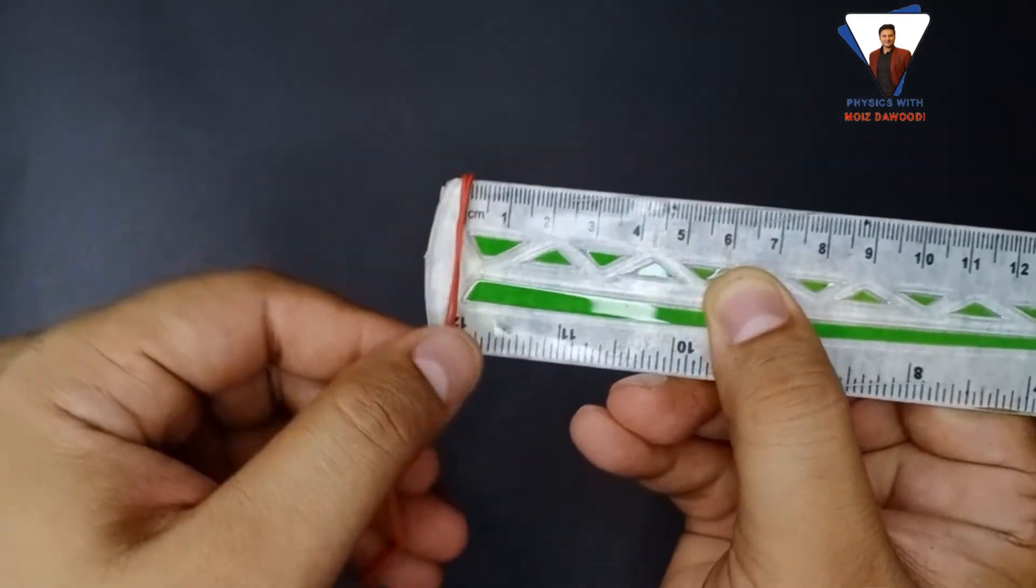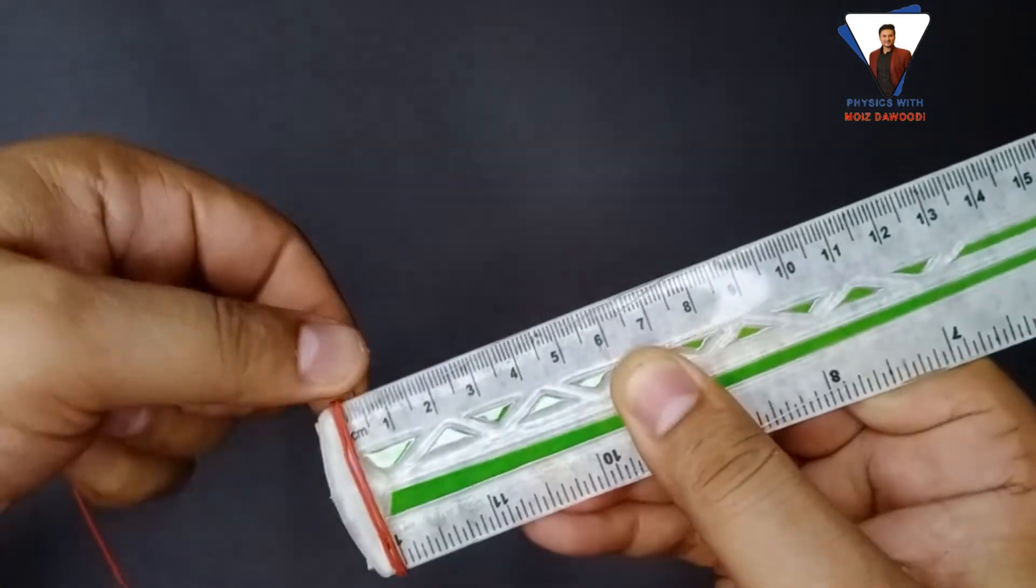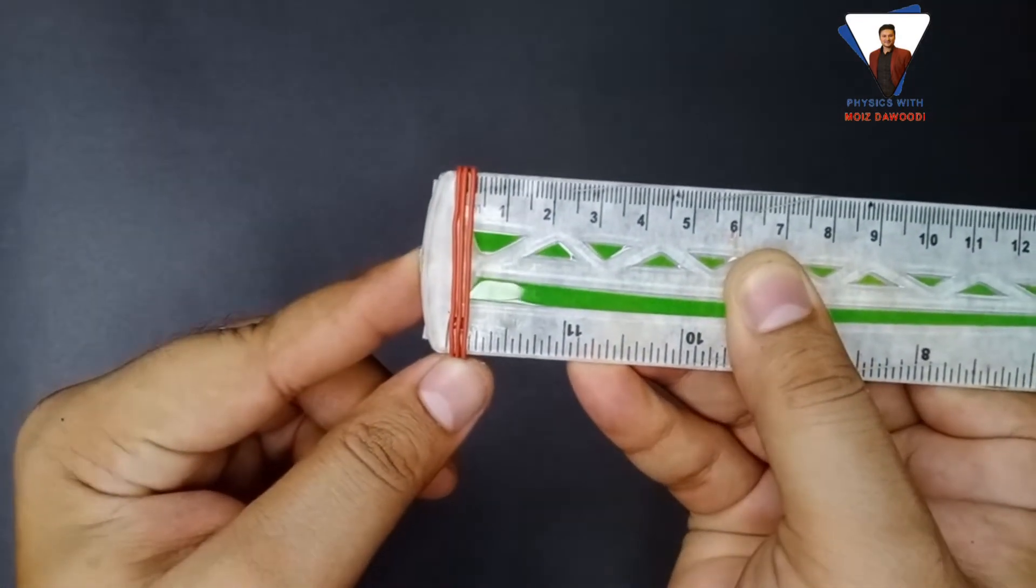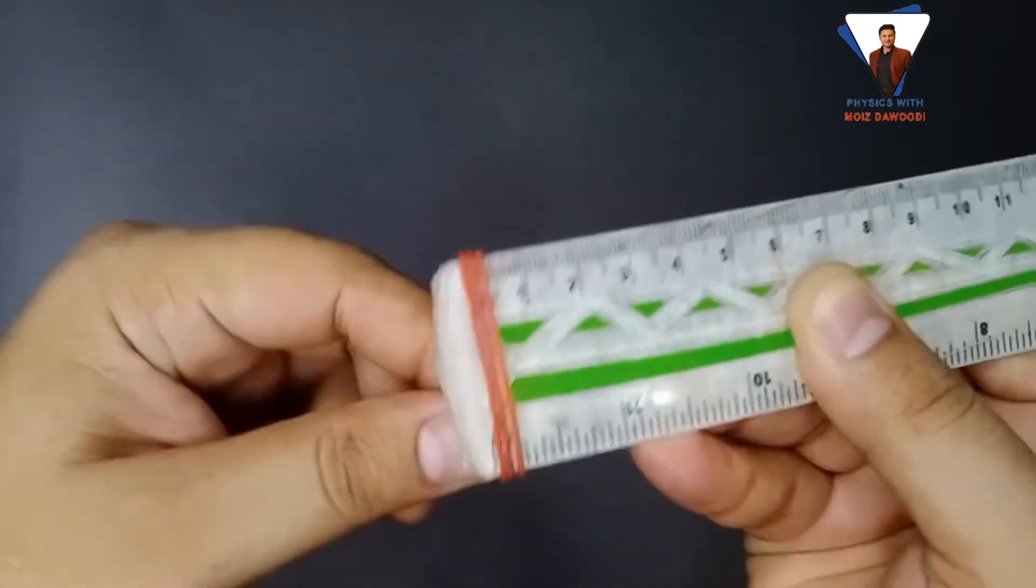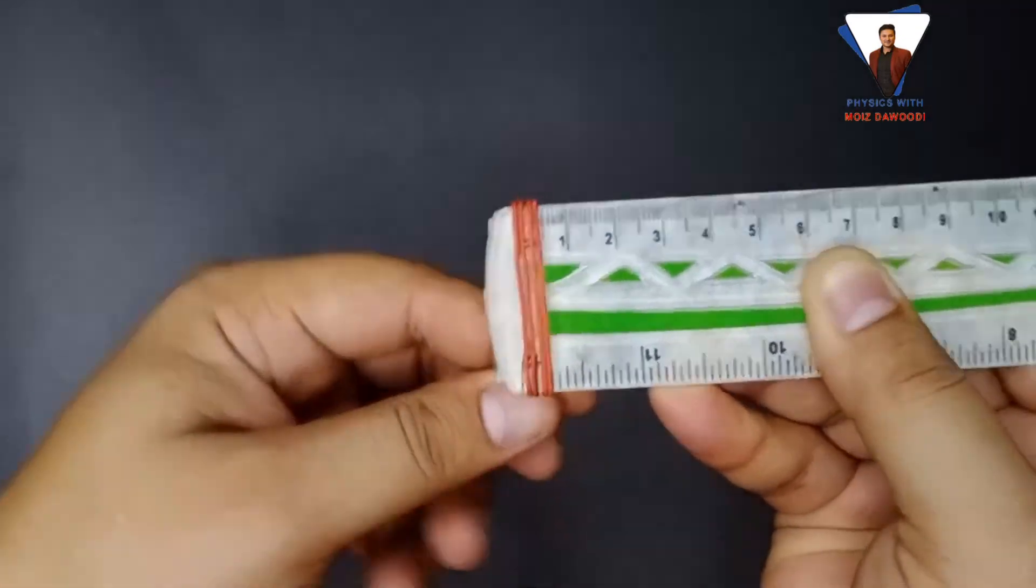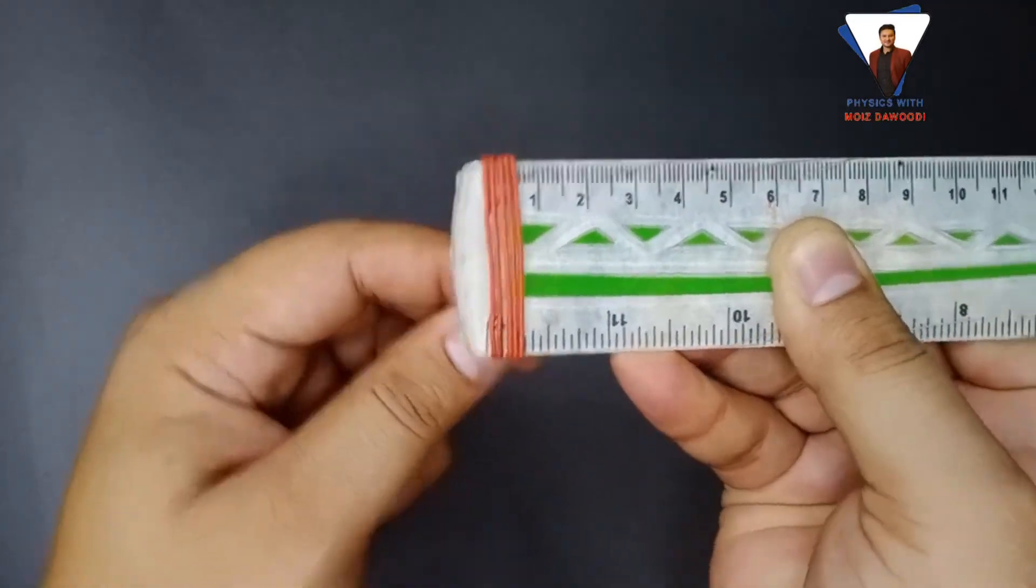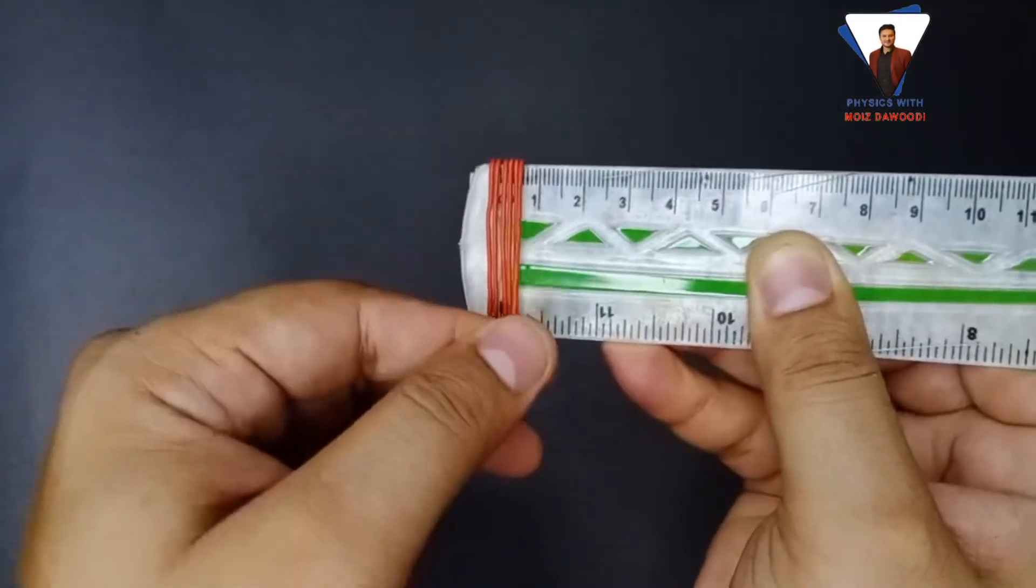We need to wrap the wire multiple times around the ruler. During the wrapping process, please keep one thing in mind—the wrapping should not overlap with each other, or there should be no gap between the wrappings of the wire.